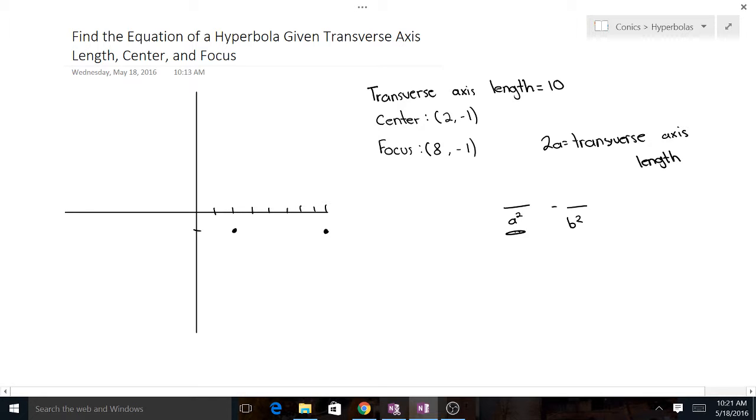We know that the a is the distance from center to vertices, so we can actually use that right away. If 2a equals 10, because that's the transverse axis length, a equals 5. So we're going to have to go up 5, so we're going to be all the way at (7, -1). That's going to put it right here.